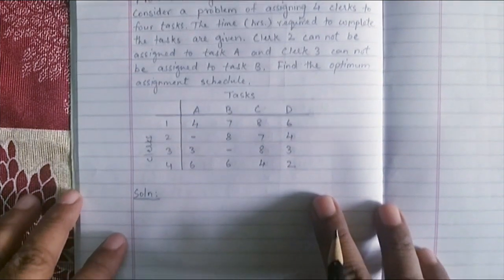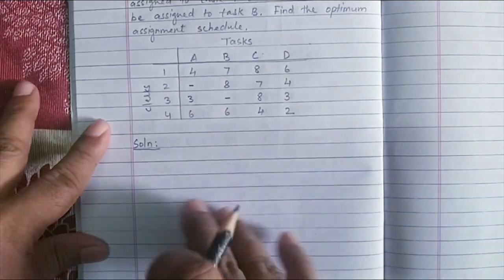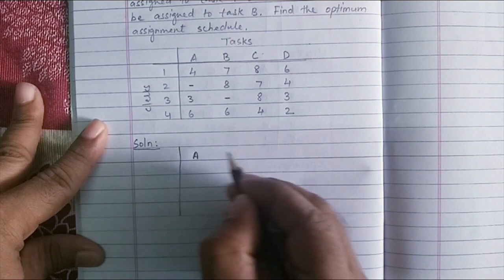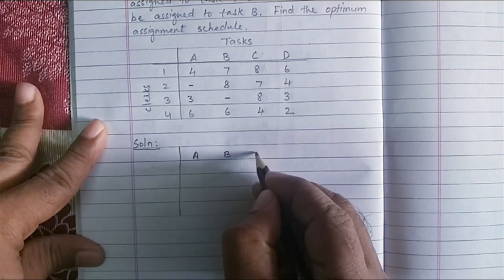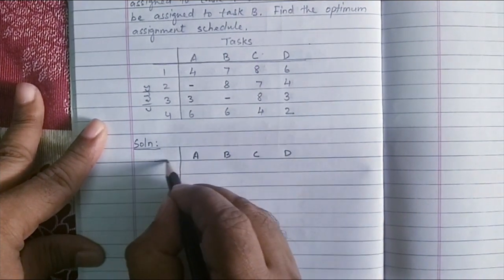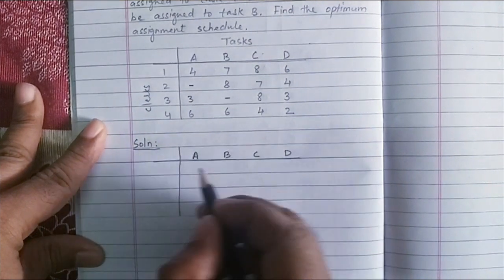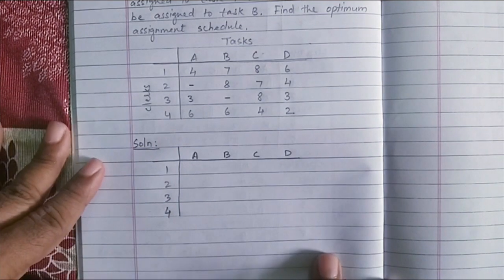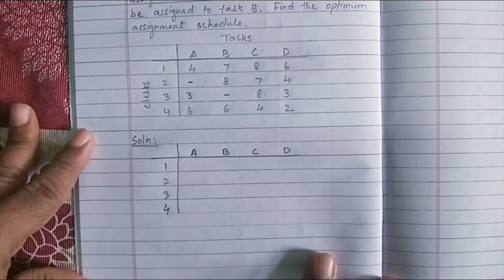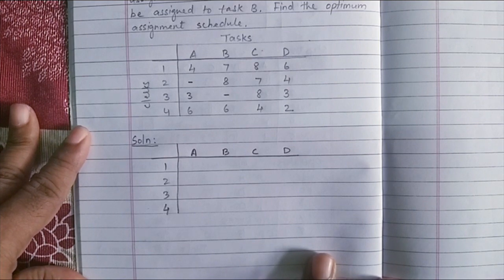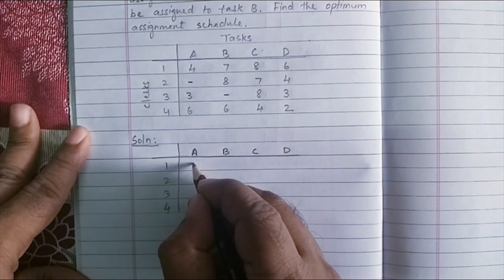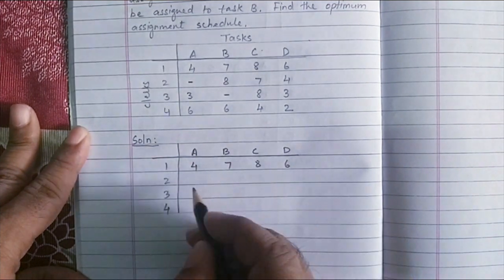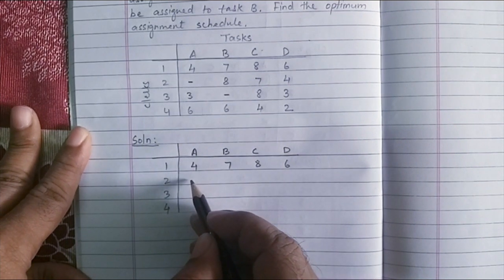So we are going to replace these hyphens with a positive infinity value. So let us write this assignment matrix again with the infinities. So I have A, B, C and D which is my four tasks. And there are four clerks. And if you look at the problem, it is a balanced problem. So we need not make any changes to the matrix dimension.